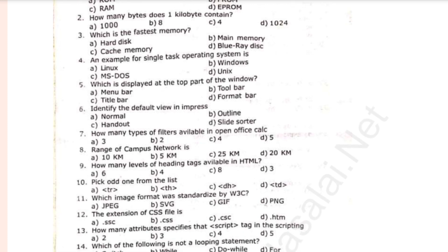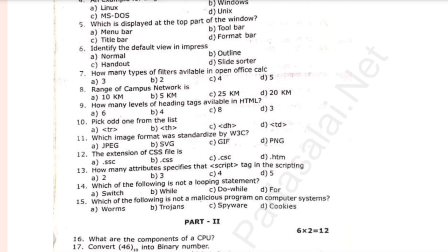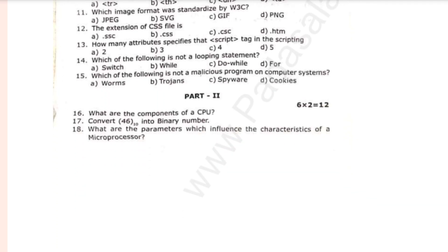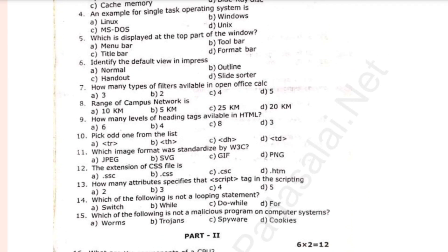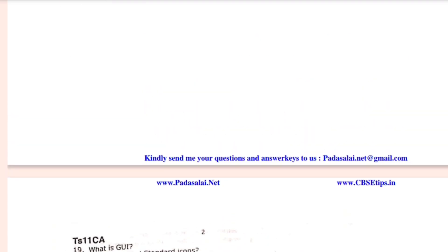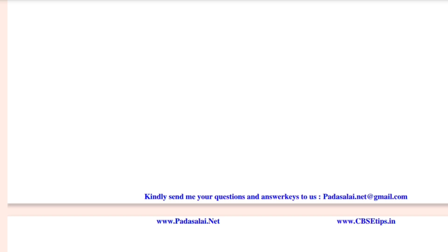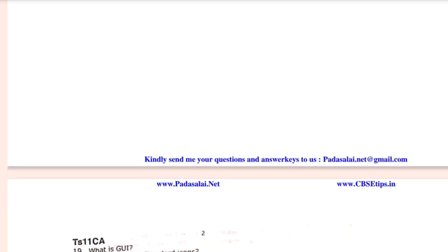Part 2: 2-mark questions. What are the components of a CPU? What are the parameters which influence the characteristics of a microprocessor? What is GUI? What are called standard icons? What are the different packages in the open office writer?